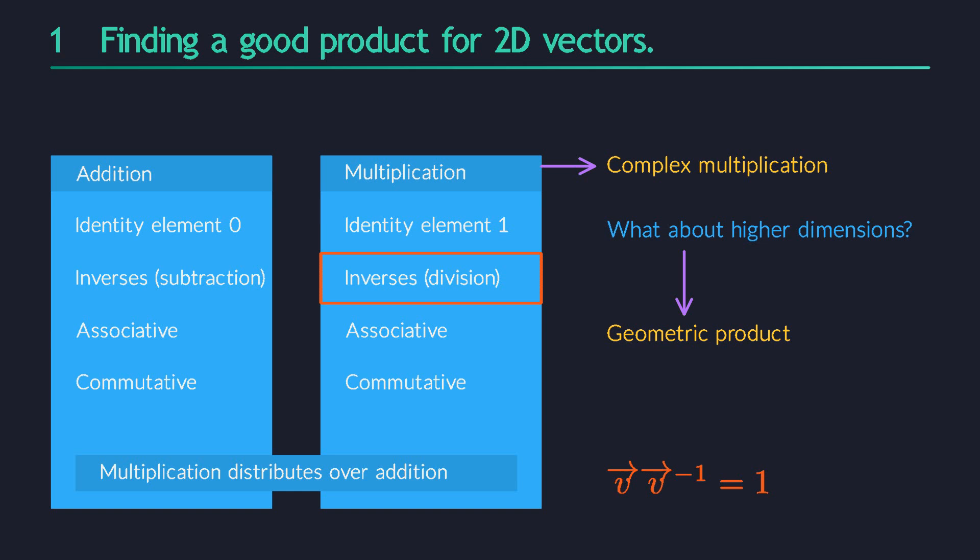But it will force us to introduce many new objects, called multivectors. And we will see that some of those new multivectors are invertible, but many aren't. We can't expect to get everything, but we will get a lot.